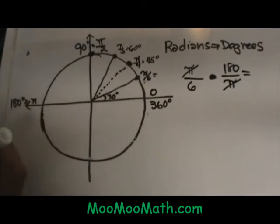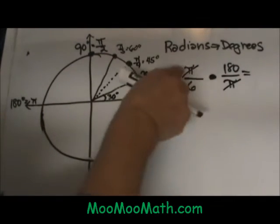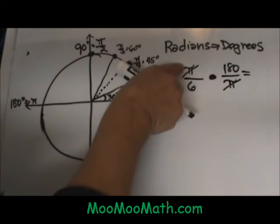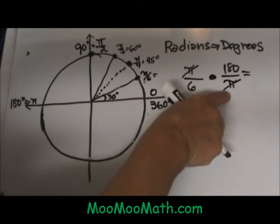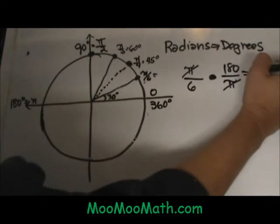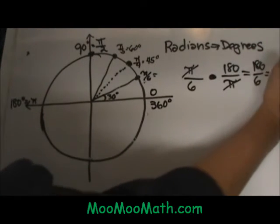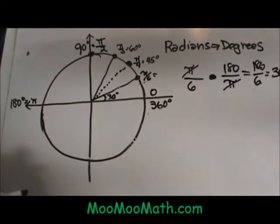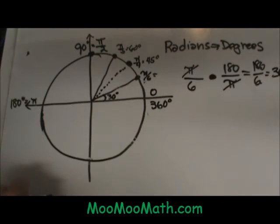Now when we do this, our π is going to cancel out. So if you can't remember this, remember if you have π on top you want π on the bottom to make it cancel out. Then I am left with 180 over 6, which if you divide 180 divided by 6 is 30 degrees. So there is an example of how you would actually calculate it.